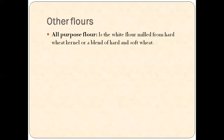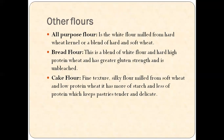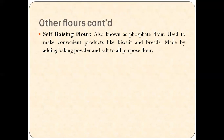Other flours available include all-purpose flour, which is white flour milled from hard wheat or a blend of hard and soft wheat. Bread flour is a blend of white flour and high-protein hard wheat, giving it greater gluten strength. Cake flour has a low protein content which keeps pastries tender and delicate. Next is self-raising flour, also known as phosphate flour, used to make convenient products like biscuits and breads — it is made by adding baking powder and salt to all-purpose flour.